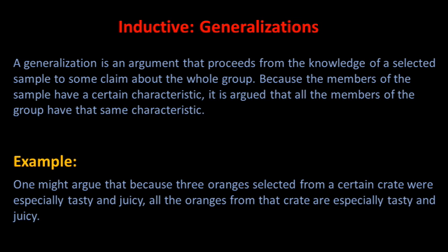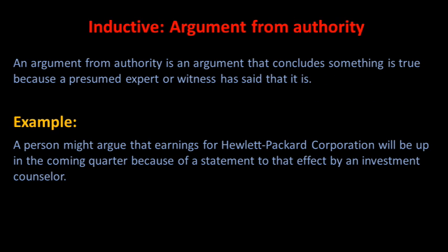These examples illustrate the use of statistics in inductive argumentation. An argument from authority is an argument that concludes something is true because a presumed expert or witness has said that it is so. For example, a person might argue that earnings for Hewlett Packard Corporation will be up in the coming quarter because of a statement to that effect by an investment counselor. Or a lawyer might argue that Mack the Knife committed the murder because an eyewitness testified to that effect under oath. Because the investment counselor and the eyewitness could be either mistaken or lying, such arguments are essentially probabilistic.